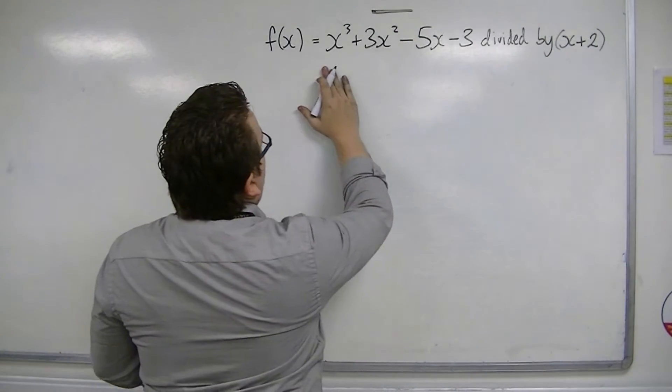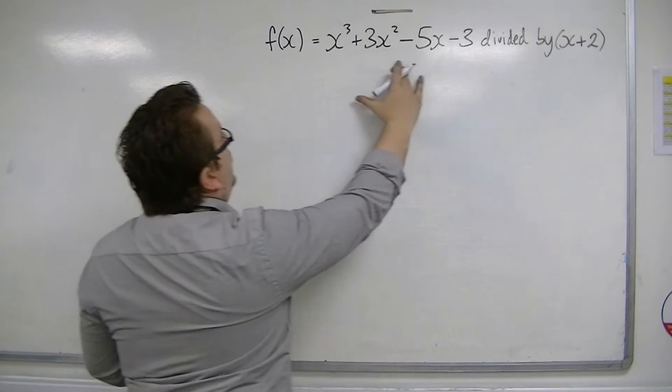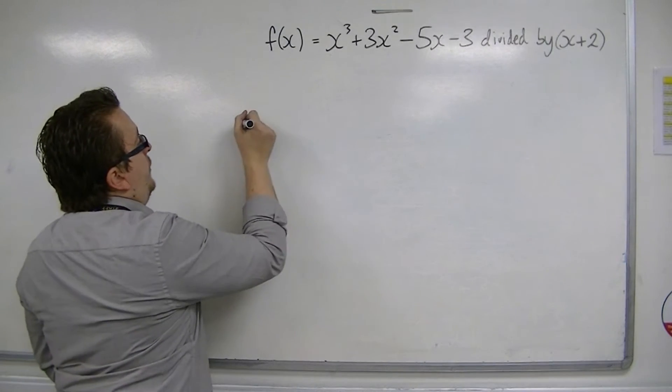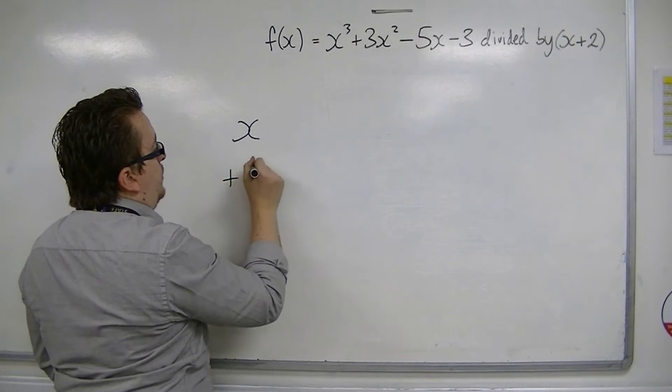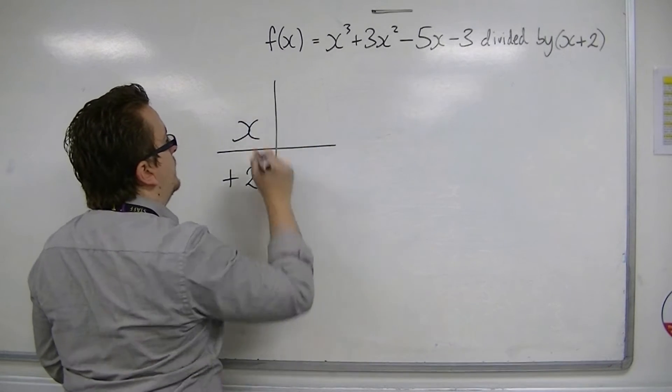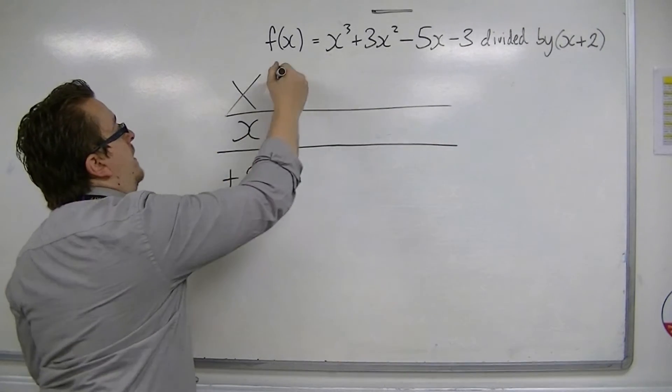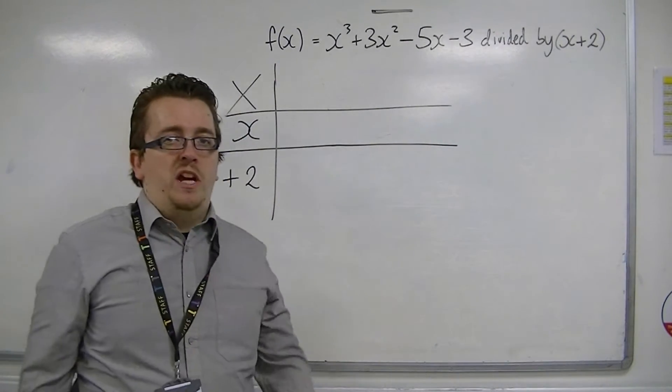So, if you're going to divide x cubed plus 3x squared minus 5x minus 3 by x plus 2, you start off by putting the x plus 2 to one side in a table. And this is like a big multiplication table.